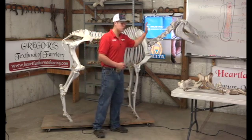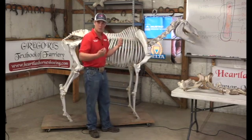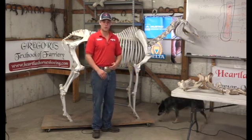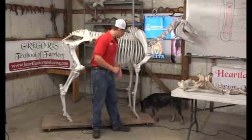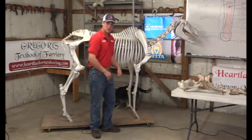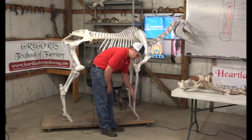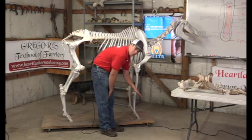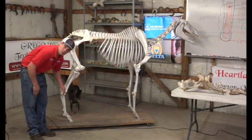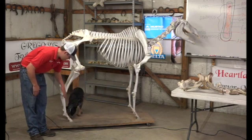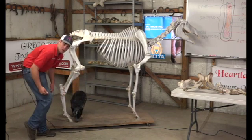When talking about terminology, we use words like cranial and caudal. Cranial means towards the cranium and caudal means towards the back. Once you get below the knee or hock, you use dorsal for towards the front and palmer for towards the back of the front limb from the knee down. Just like the palm of your hand, palmer is towards the back.